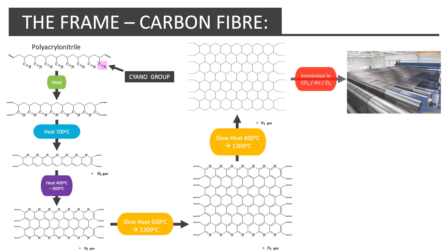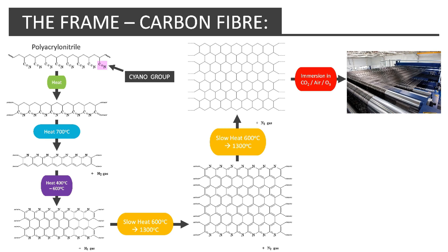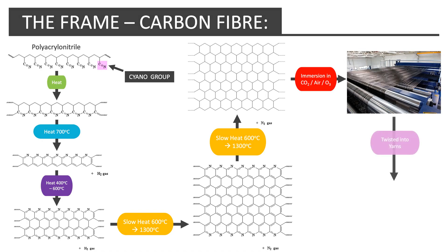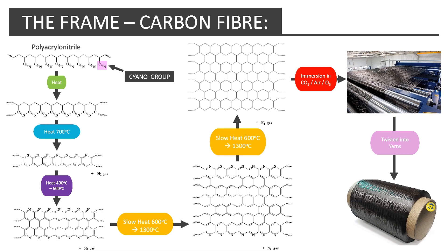The sheets of carbon are then coated with oxygen to increase its ability to bond with other materials. This is done by immersing the sheets into carbon dioxide, air, or ozone. The sheets, or fibres, are then twisted and folded together into yarns, giving it its strength.